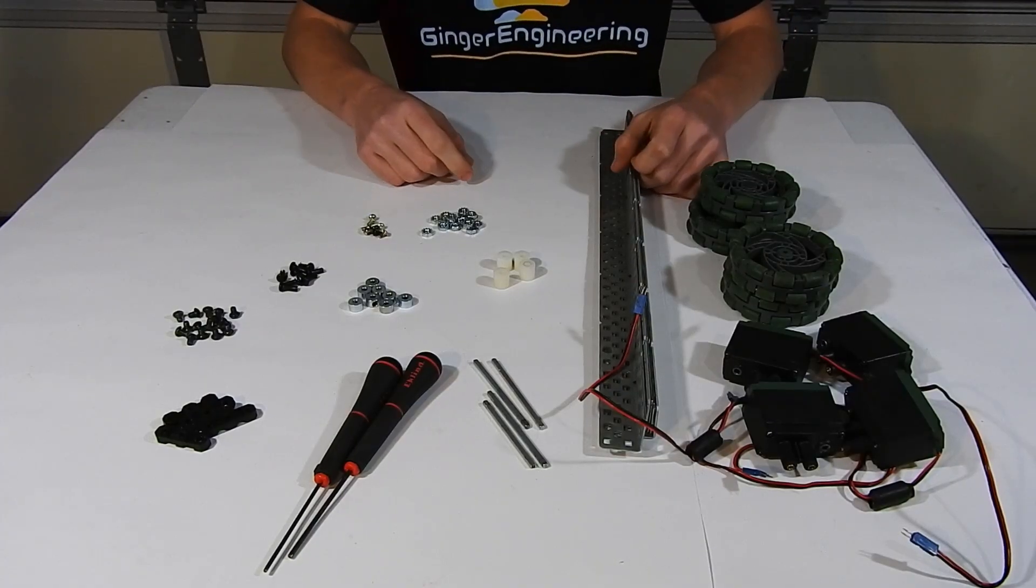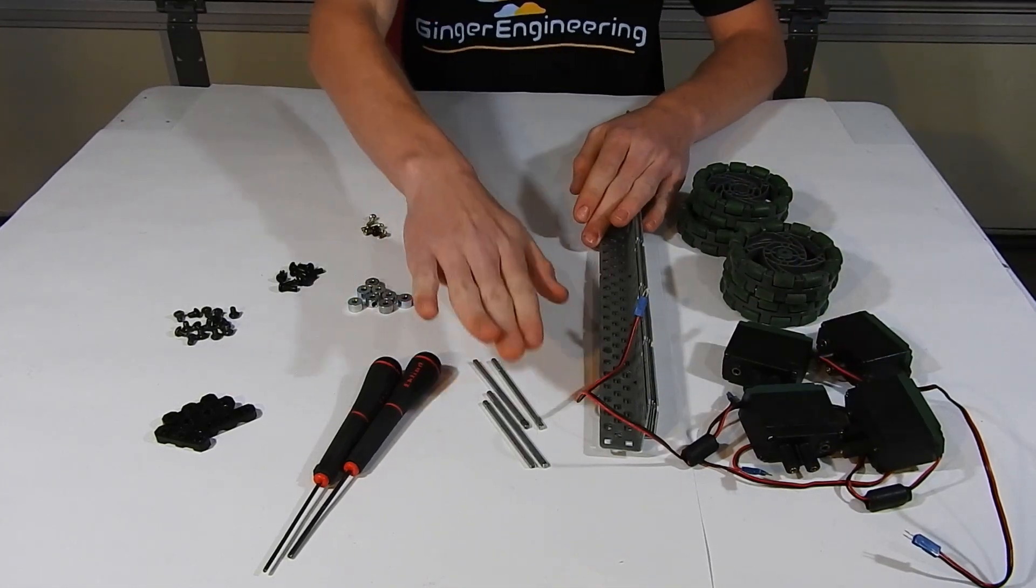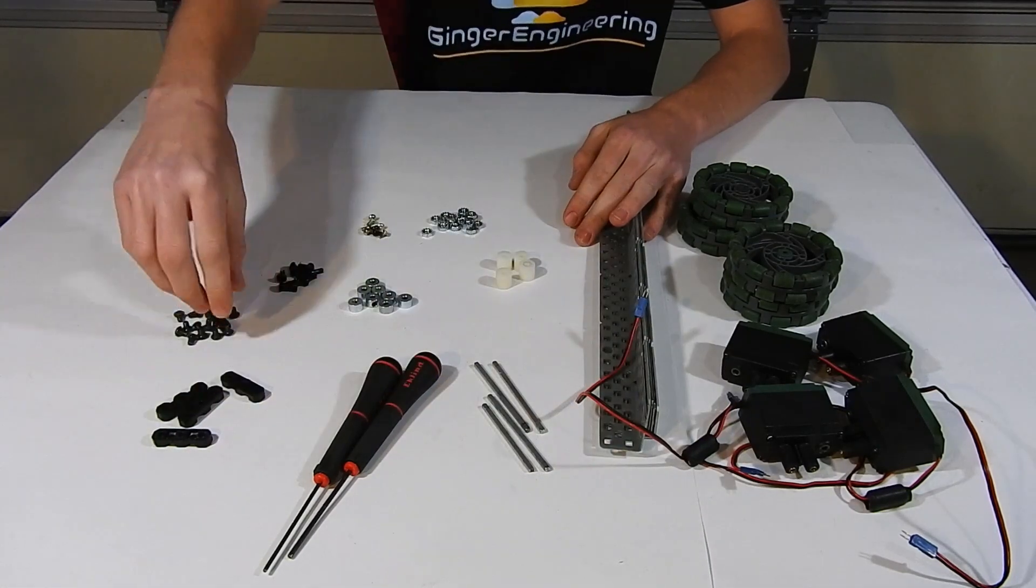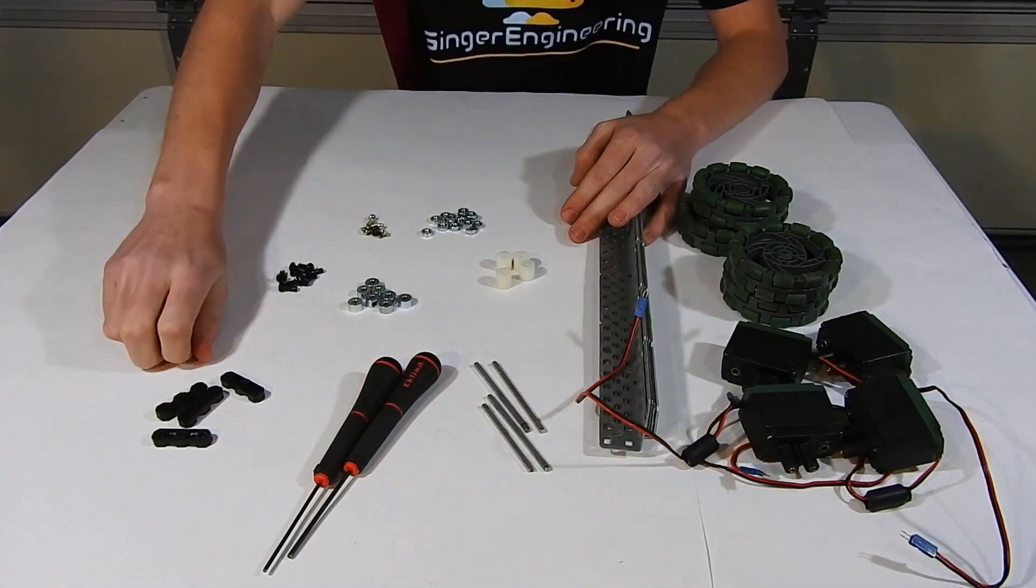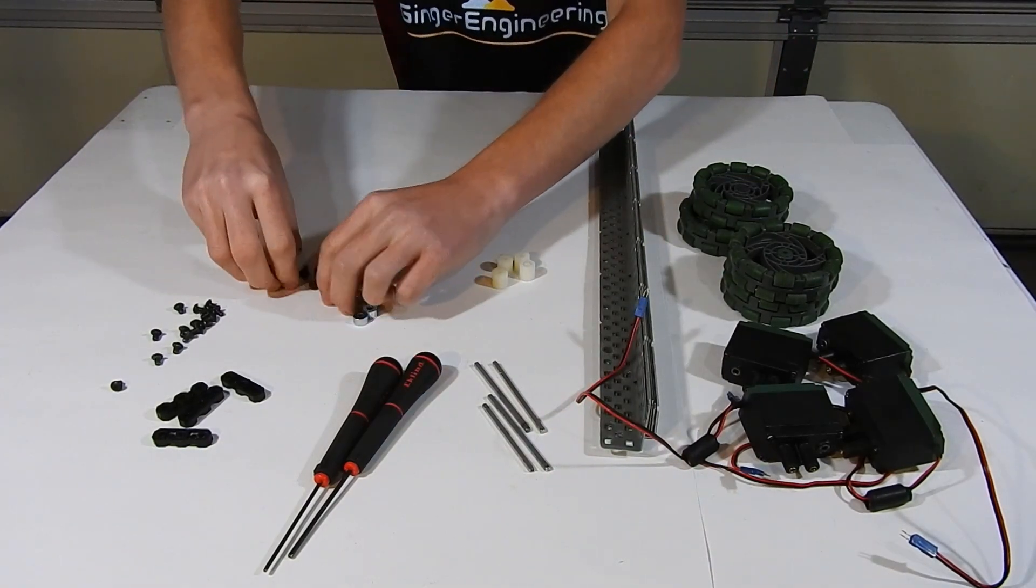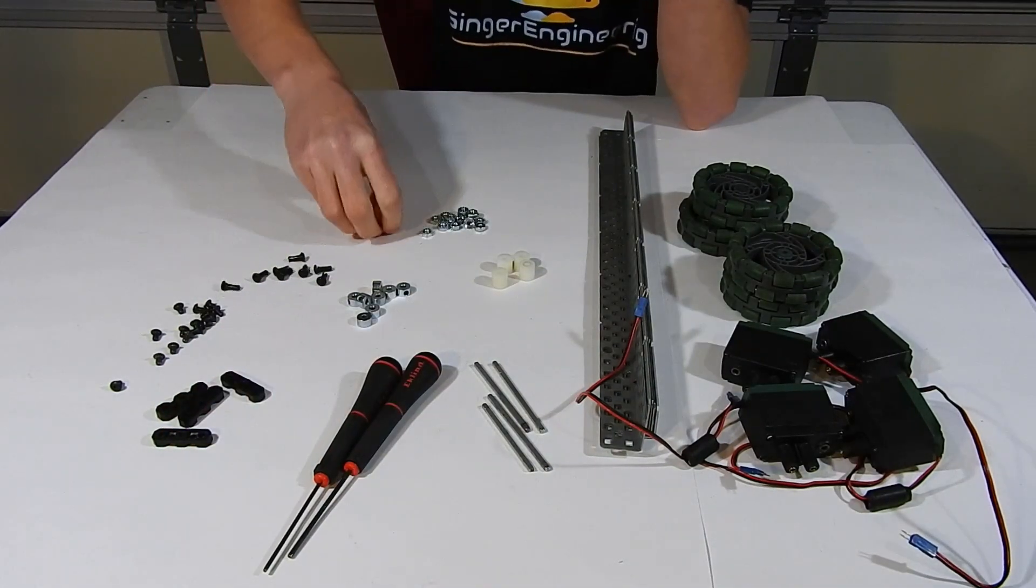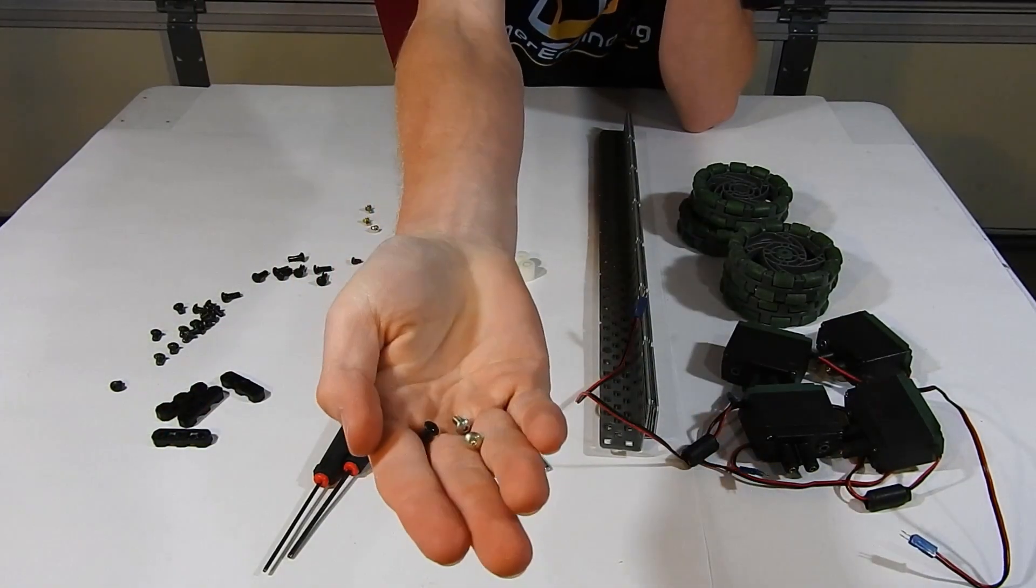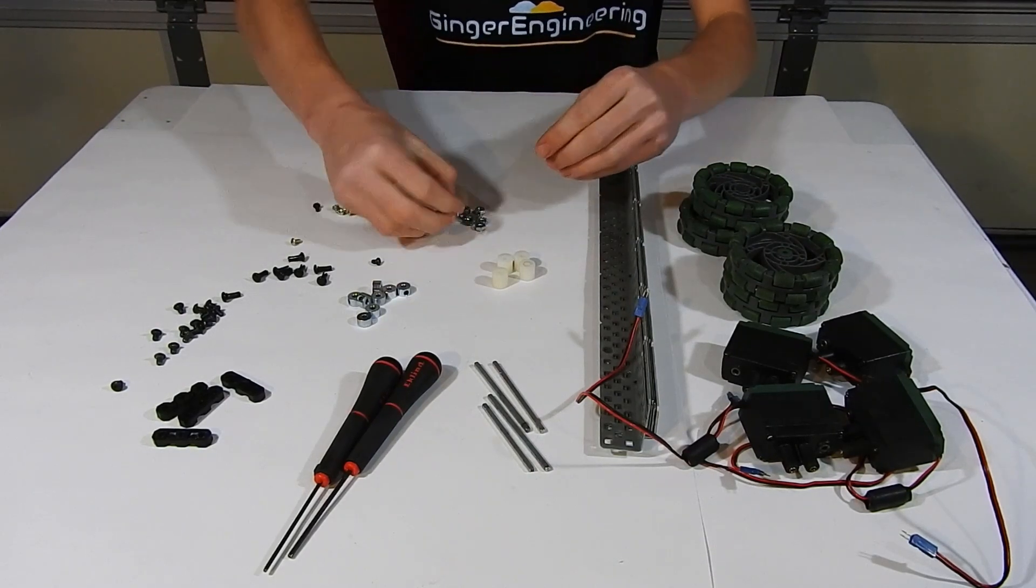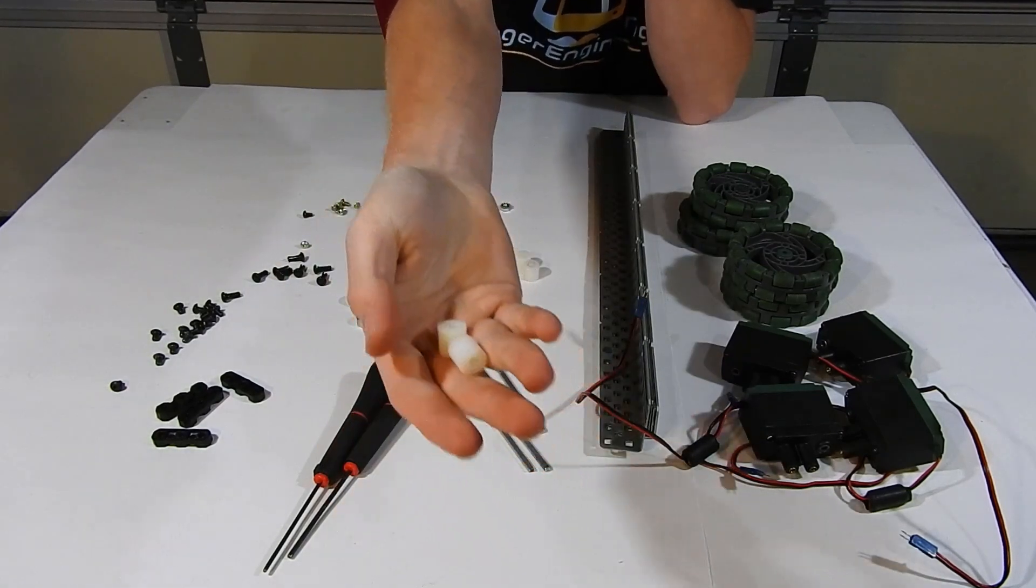To start out you're going to need wheels, motors, metal, axles, tools, flat bearings, screws, collars, bearing attachment rivets, screws for your motors, nuts, and finally some spacers.